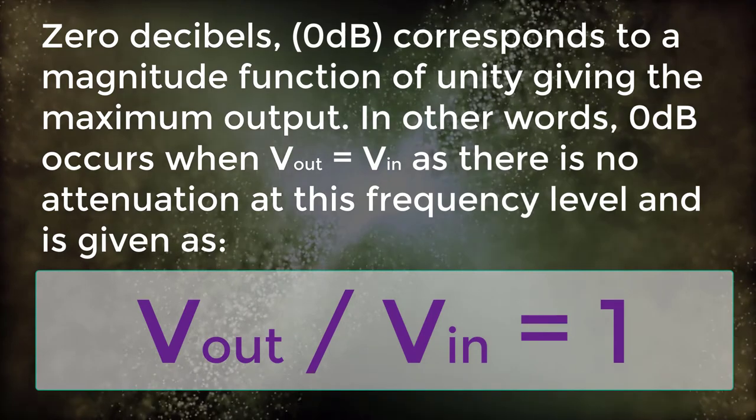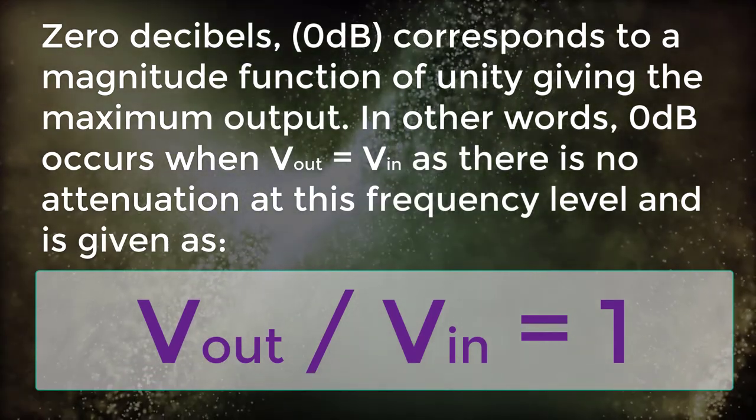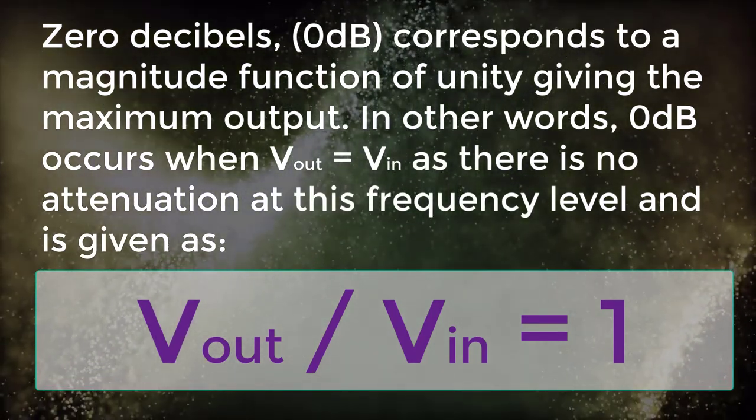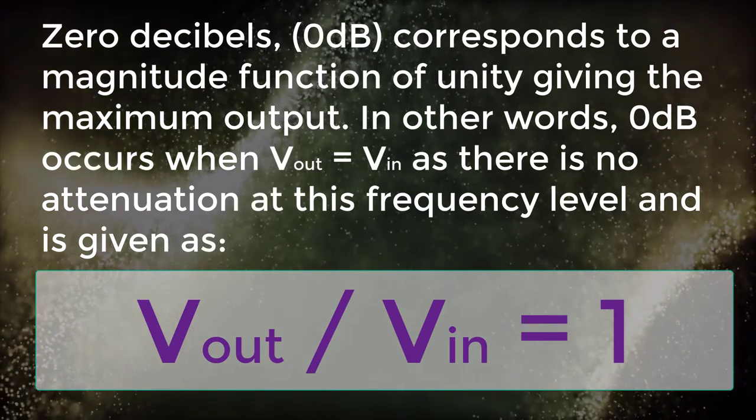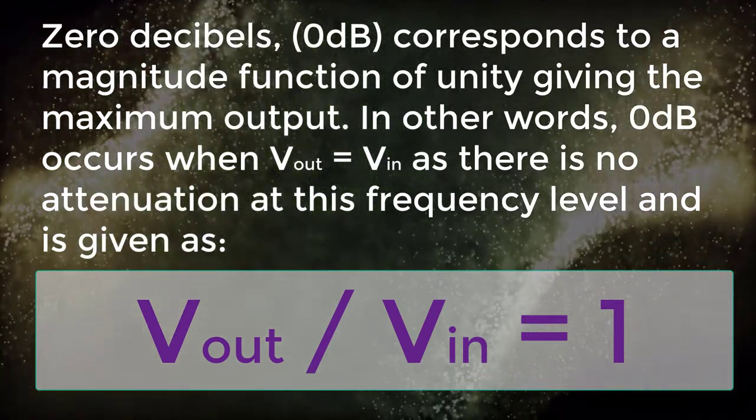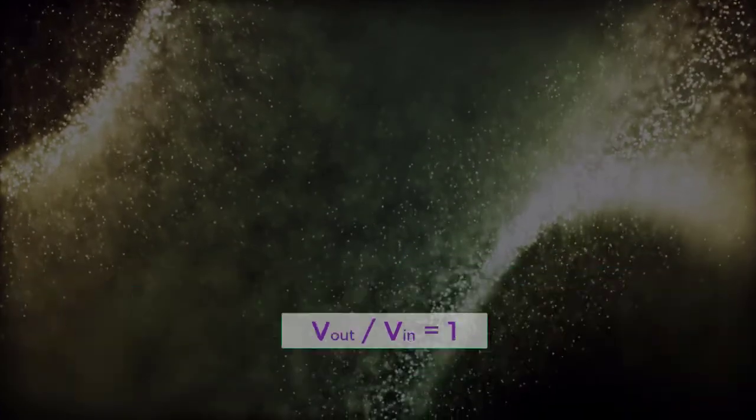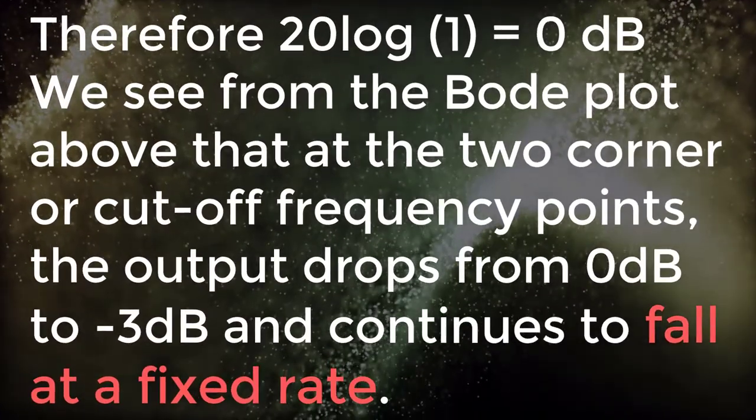In other words, 0 dB occurs when Vout is equal to Vin as there is no attenuation at this frequency level and is given as Vout by Vin equals 1. Therefore 20 log 1 is equal to 0 dB.